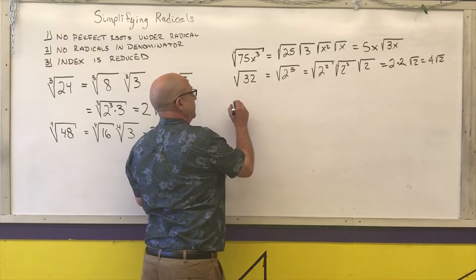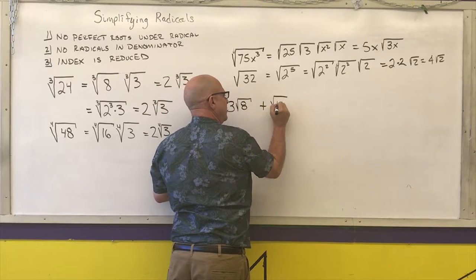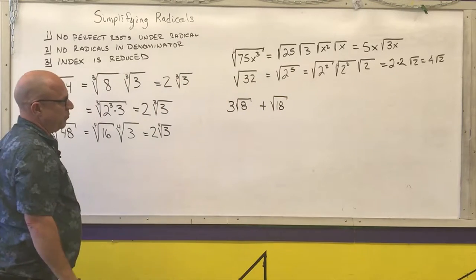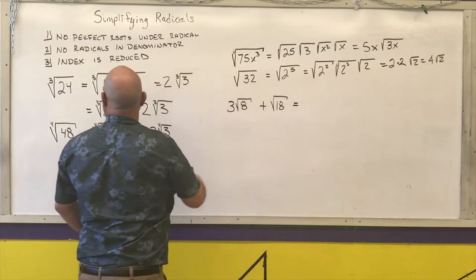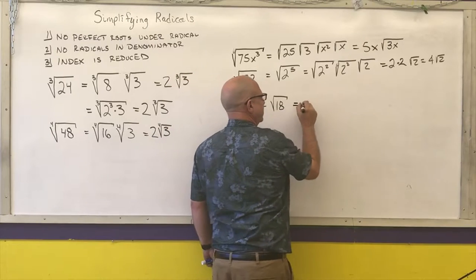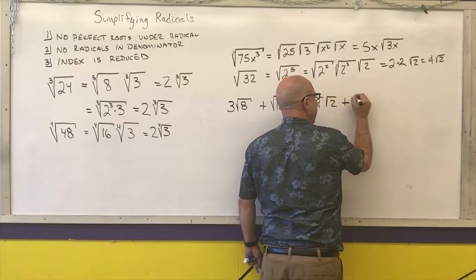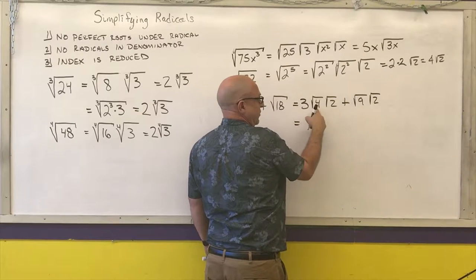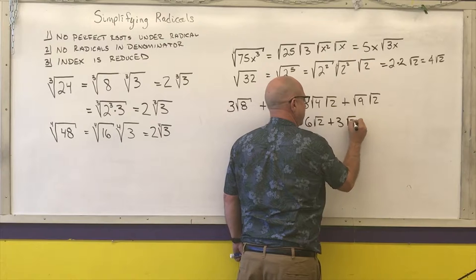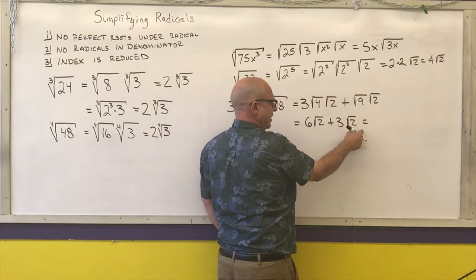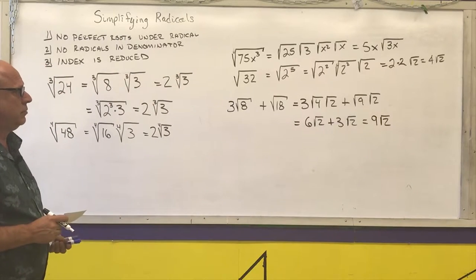A couple more examples of simplifying radicals. If you end up with two different radicands underneath the same root, see if you can combine them. For 3 times the square root of 8 plus the square root of 18: 3 root 8 equals 3 times the square root of 4 times the square root of 2, and root 18 equals the square root of 9 times the square root of 2. Square root of 4 is 2, so 2 times 3 is 6; square root of 9 is 3. Then 6 root 2 plus 3 root 2 equals 9 root 2.